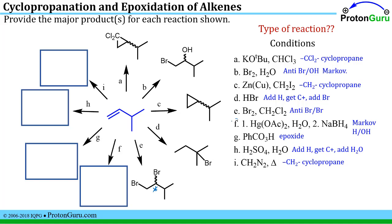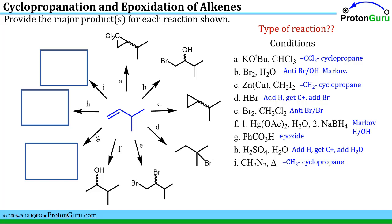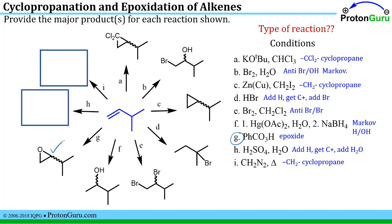Reaction F: seeing mercury means Markovnikov addition of H and OH, with no rearrangement possible. The OH goes on the more substituted side. There are already two H's there so I simply add a third; a chiral center is made, giving a racemic mixture of 50% R and 50% S. Step G shows CO3H — a peroxy acid with a phenyl group — so we make an epoxide. That generates a chiral center, giving this product as a racemic mixture: 50% R and 50% S at that stereocenter.